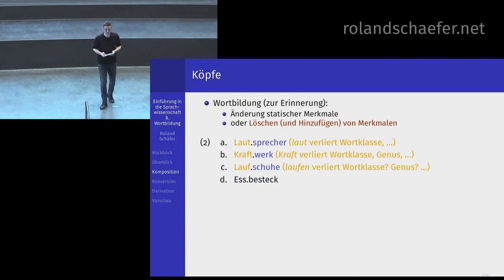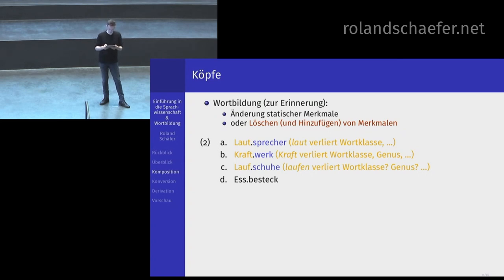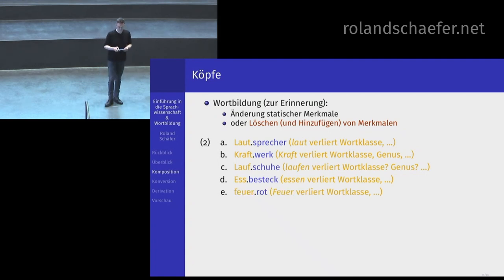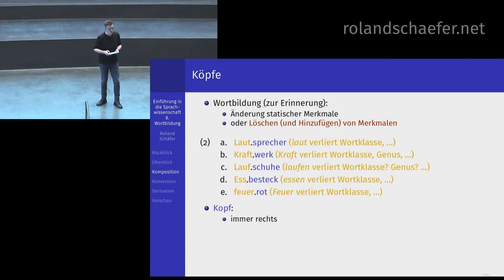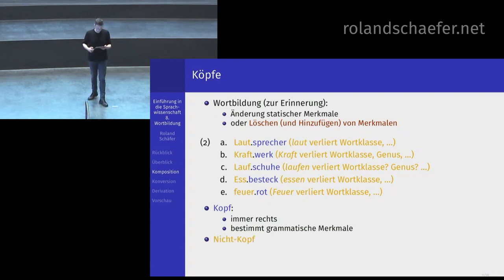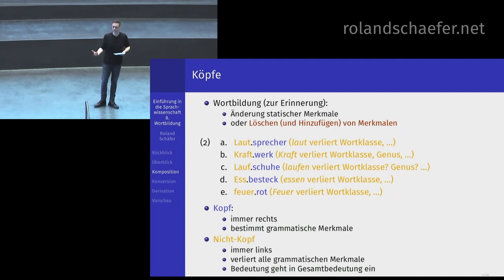Bei Essbesteck ist eindeutig Essen ein Verbstamm – sonst wäre es Essensbesteck. Da haben Sie Besteck, das Besteck, das bestimmt die Wortklasse und, weil es ein Substantiv ist, auch das Genus. Essen verliert seine Wortklasse. Bei Feuerrot: das ganze Wort ist ein Adjektiv, Feuer ist ein Substantiv – die Wortklasse von Feuer geht verloren. Das Blaue ist immer der Kopf, und der Kopf steht beim Kompositum immer rechts. Der Kopf bestimmt alle grammatischen Merkmale: Wortklasse, Genus und so weiter. Der Nichtkopf ist das, was links steht – er verliert alle grammatischen Merkmale und die Bedeutung wird mit der Gesamtbedeutung verrechnet.